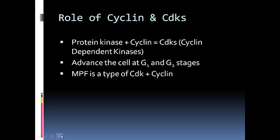A kinase, which is a type of protein bonded to a cyclin, makes a CDK — a cyclin-dependent kinase. The cyclin can come in different forms — one, two, three, or four different types — and depending on what type of cyclin the kinase binds to, that tells the cell what stage to move on to. At the G1 and G2 stages there are different cyclins, and therefore different CDKs, that move the cell through those stages.